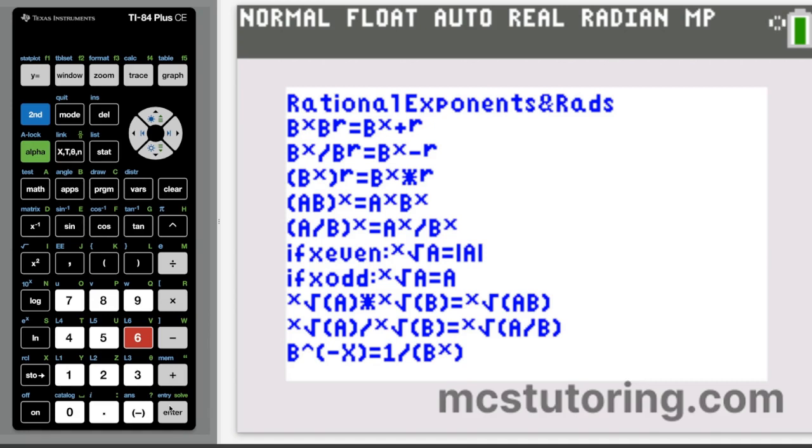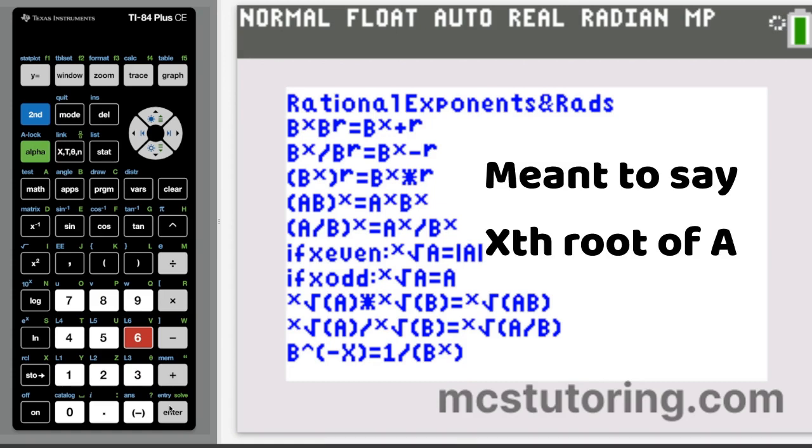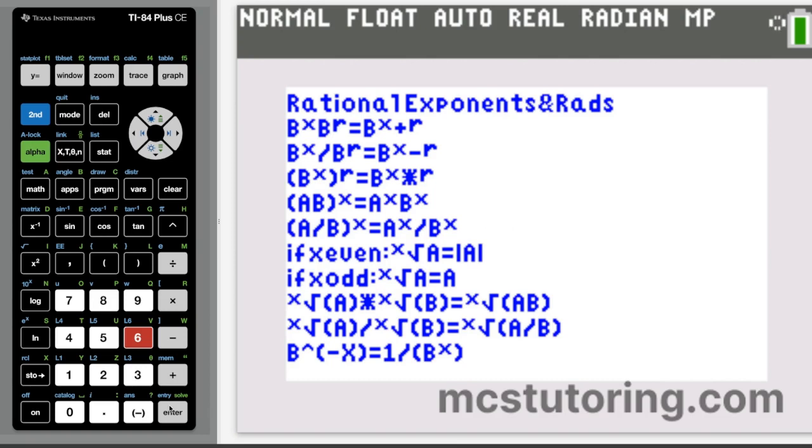Now, one thing, and this just still irks me because I got this wrong in my algebra class decades ago. If x is even, then the x root of a is the absolute value of a. Remember, only if x is even. So if x is 2, 4, 6, 8, etc., the x root of a equals the absolute value of a. And then if x is odd, the x root of a just equals a because we can have the third, fifth, or seventh root of negative numbers.